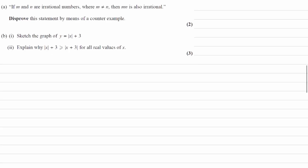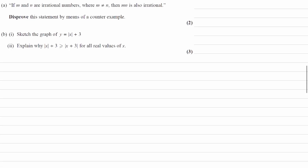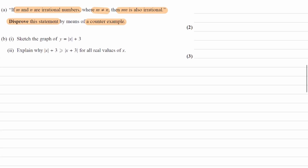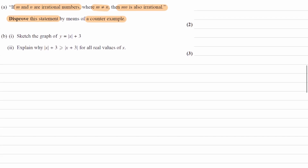If m and n are irrational numbers, where m is not equal to n, then mn — the product — is also irrational. Disprove this statement by means of a counterexample. A counterexample means we find a scenario where this statement is not true, and that's how we disprove it.